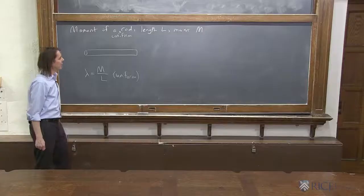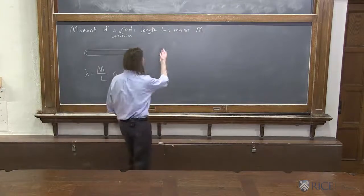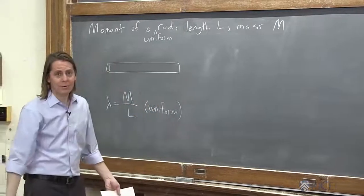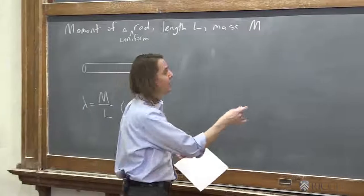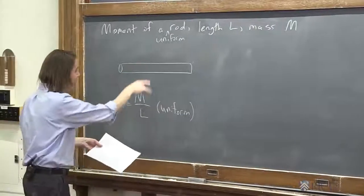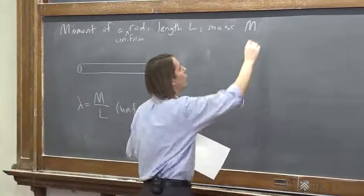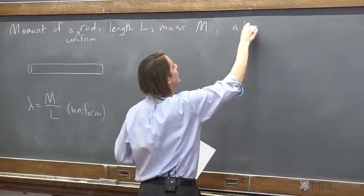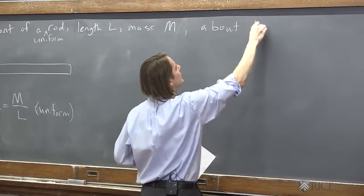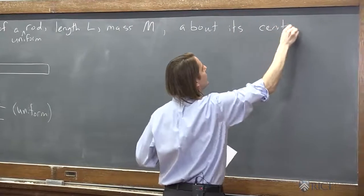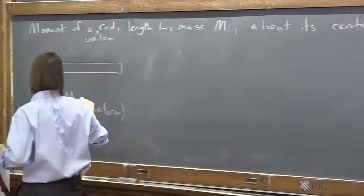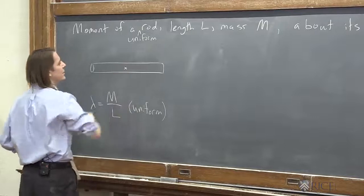All right, so now, are we ready to calculate the moment? No, we're not ready to calculate the moment. We've got to know where the axis is, right? That's the whole, you can't, just an object doesn't have a moment of inertia. You also have to have where the axis is. So now we're going to say about its center. So here's your axis, is right in the middle.